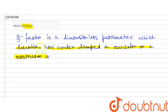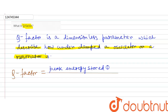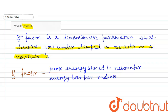So we have to write our keywords. The Q factor is the ratio of the peak energy stored in a resonator, divided by the energy lost per radian of cycle.